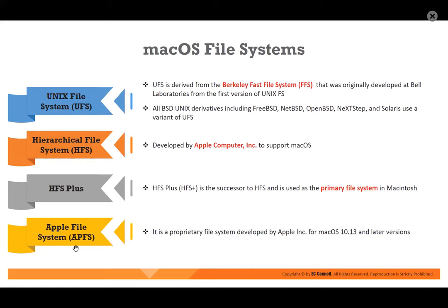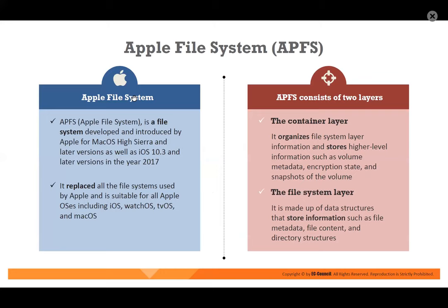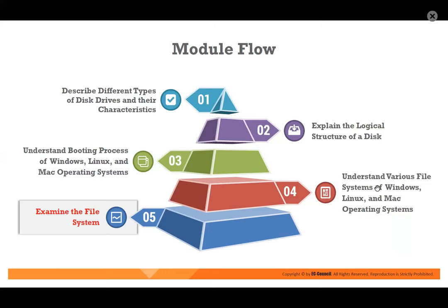Mac has a different file system — UFS, HFS (hierarchical file system), and APFS — Apple File System. APFS considers two layers: a container layer and a file system layer. So let us come to the last part, which is examining the file. Then we are going to get to the lab. I'm sorry this is heavy theory, but you need to understand the file system if you want to later recover data.